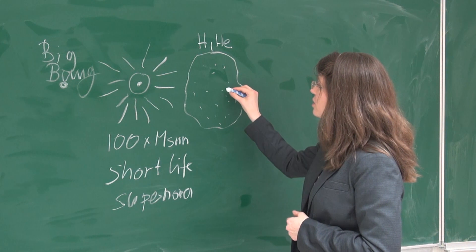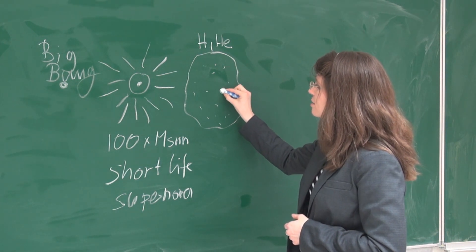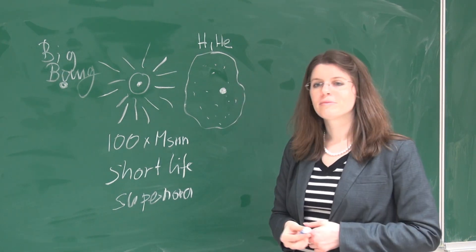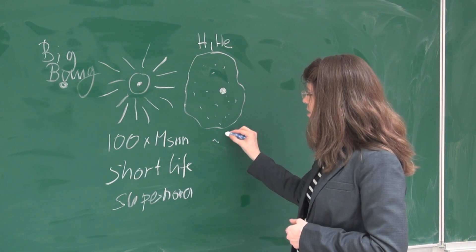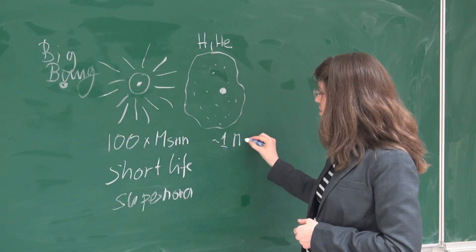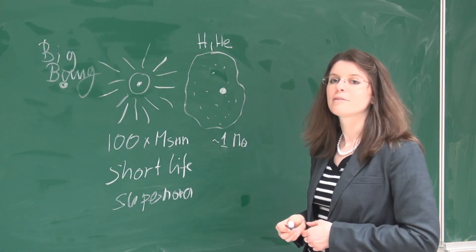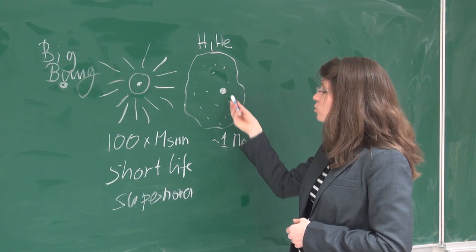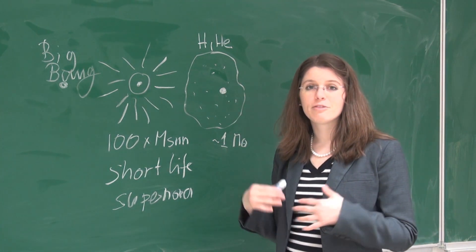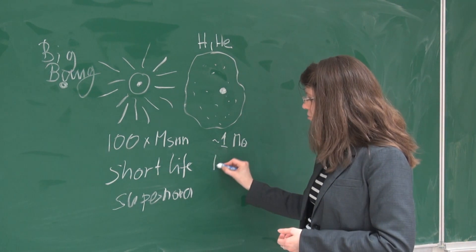What happened then? Well, from this material, small stars could form. And those have maybe the mass of the Sun or less. Small stars have a very long lifetime. They are really efficient.